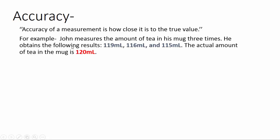For example, John measures the amount of tea in his mug three times and obtains the following results. The actual amount of tea in the mug is 120 ml. Now let's check the accuracy of these three results.